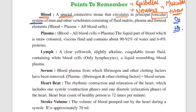Oxygenated blood runs in vessels; deoxygenated blood also runs in vessels. Vessels, capillaries — all these form a network of pipelines for your fluid circulation. It is not only blood that is a fluid — plasma is also there, lymph is also there, serum is also there. The circulation of all of these happens through the vascular system.